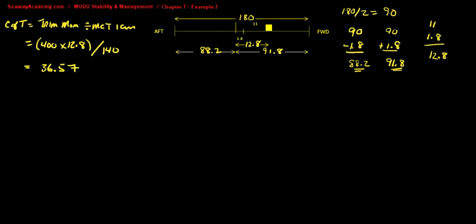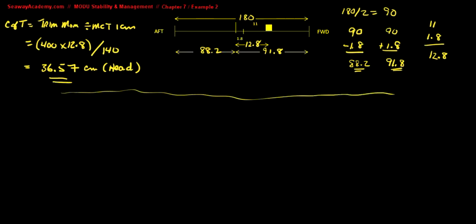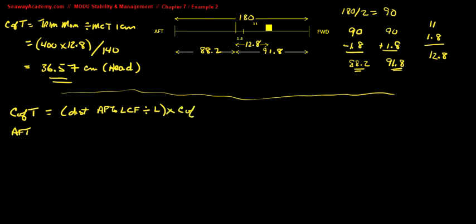Now we can calculate the change of trim aft and change of trim forward. The formula for change of trim aft is the distance from the aft perpendicular to the longitudinal center of flotation, divided by the total length, times your change of trim. That distance is 88.2 divided by the total length of 180, times the change of trim of 36.57.